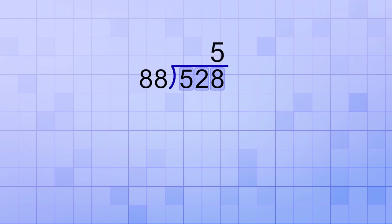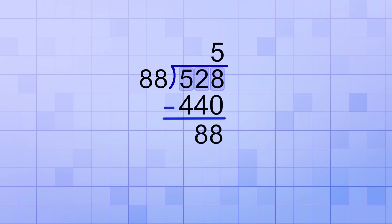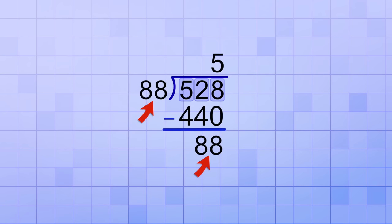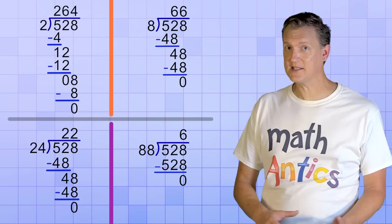Now, 5 times 88 is kind of tricky on its own, so you may want to use scratch paper to work it out. 5 times 88 is 440, and when we subtract 440 from 528, we get a remainder of 88. Hmm, looks like our estimate was too low. Whenever the remainder is greater than or equal to the divisor, it means we underestimated the answer. In fact, since our remainder is equal to the divisor, it means we could have divided exactly one more 88 into 528. So we should have picked 6. And if you multiply 6 times 88, you'll see that it's 528.